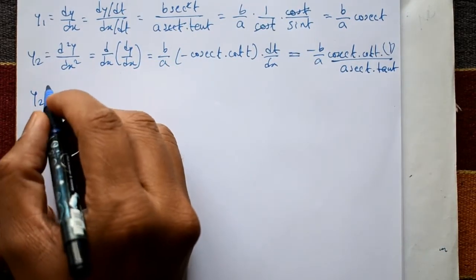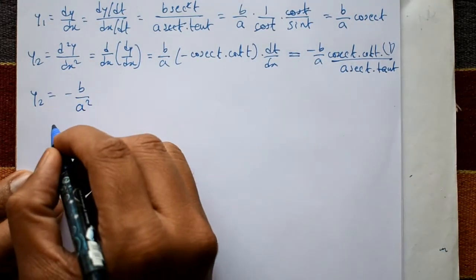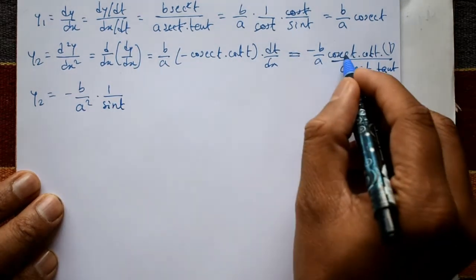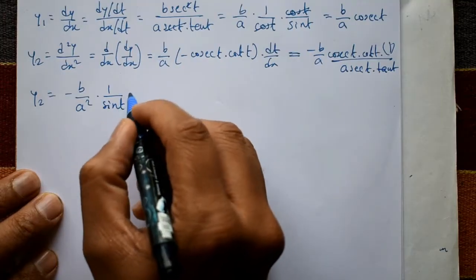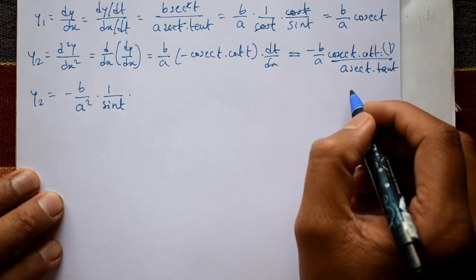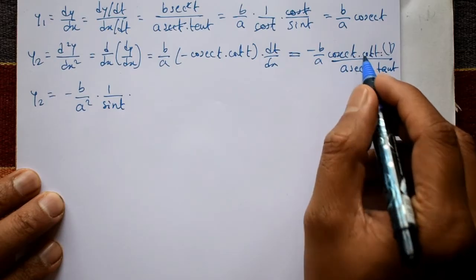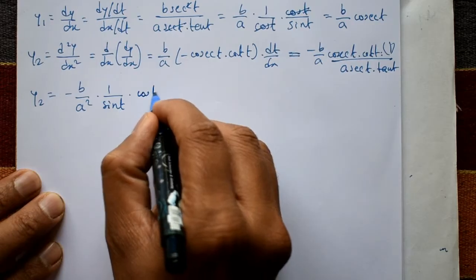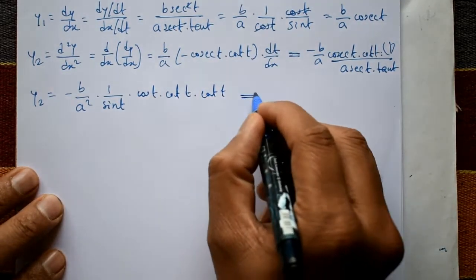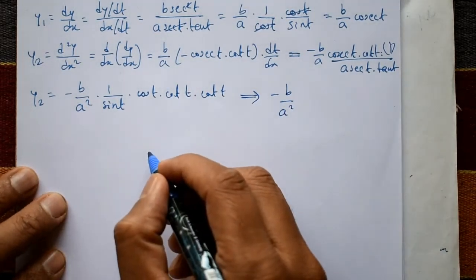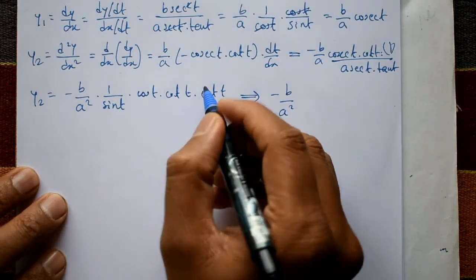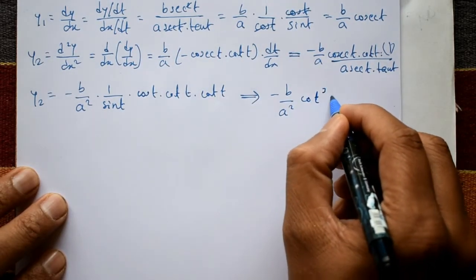Therefore y2 = -b/a² · cosec(t)·cot(t) · (1/(sec(t)·tan(t))). Now cosec(t) = 1/sin(t), cot(t) = cos(t)/sin(t), sec(t) = 1/cos(t), and 1/tan(t) = cot(t). Simplifying: cos(t)/sin(t) gives cot(t) appearing three times, so y2 = -b/a² · cot³(t).